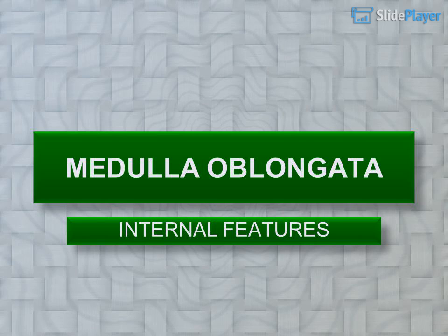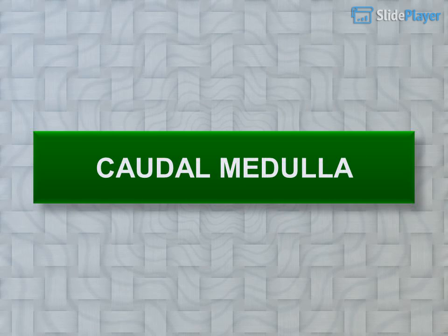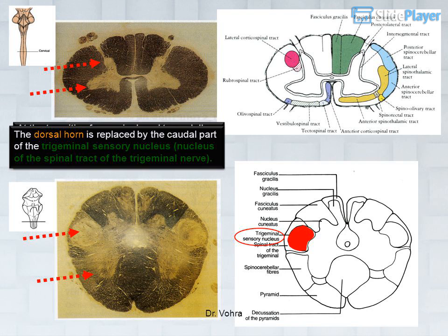Medulla oblongata internal features. At the transition from spinal cord to medulla, the pattern of gray and white matter undergoes considerable rearrangement. The ventral horn becomes much attenuated, and the dorsal horn is replaced by the caudal part of the trigeminal sensory nucleus.